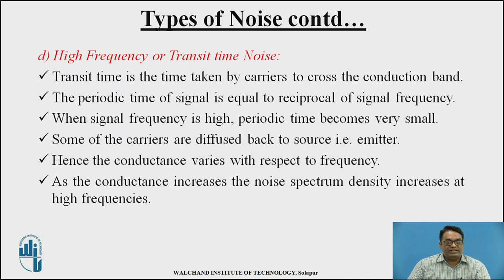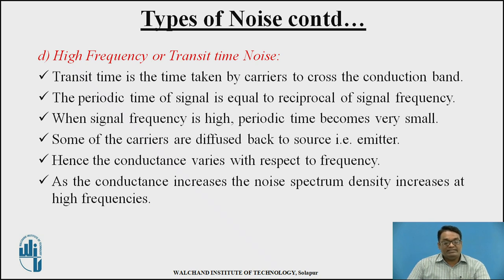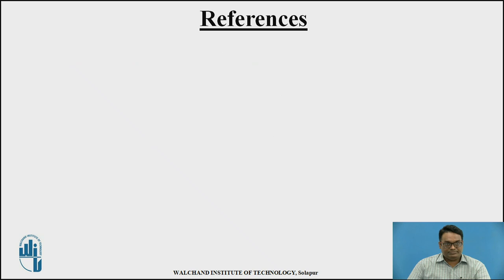High-frequency or transit time noise occurs when carriers (electrons) cross the conduction band. When signal frequency is high, the periodic time becomes very small, causing some carriers to diffuse back to the source (emitter). Hence conductance varies with respect to frequency, and as conductance increases, the noise spectral density also increases at high frequencies.